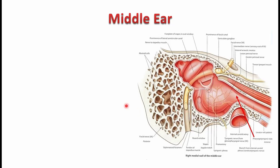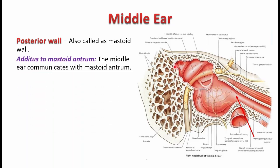The posterior wall of the middle ear cavity is called the mastoid wall because it is related to the mastoid antrum and the mastoid air cells. In the upper part of the posterior wall, you see an opening called the aditus to the mastoid antrum. Through this opening, the middle ear cavity communicates with the mastoid antrum.